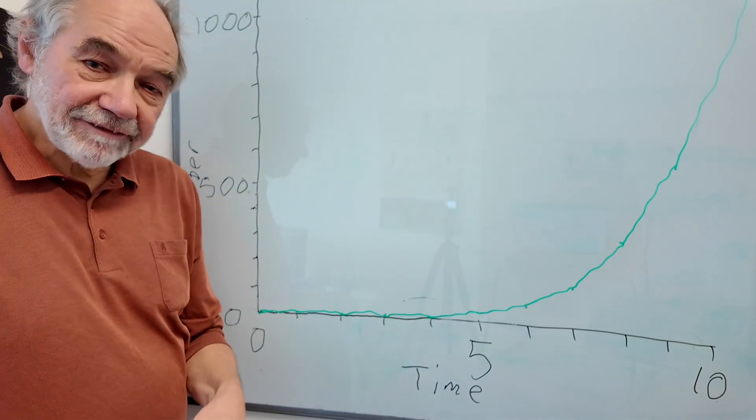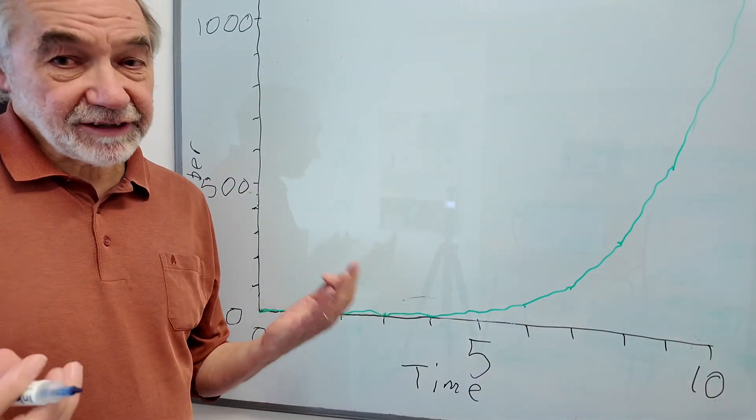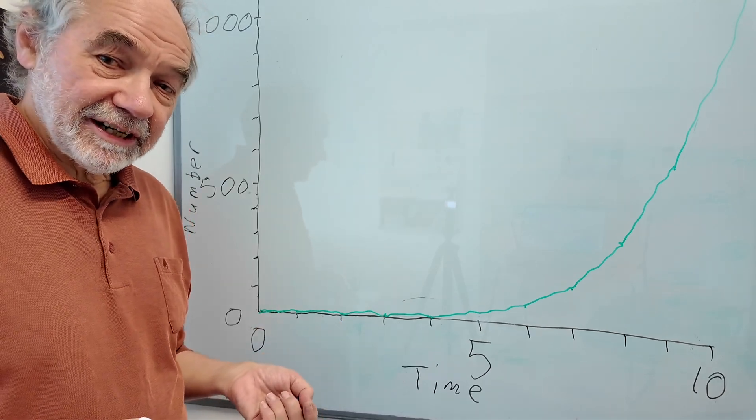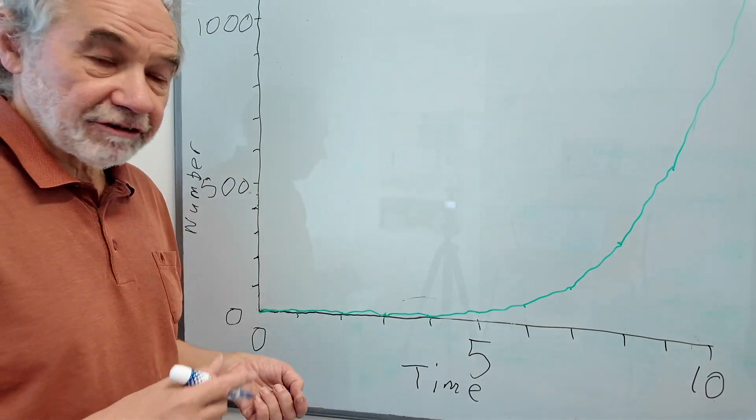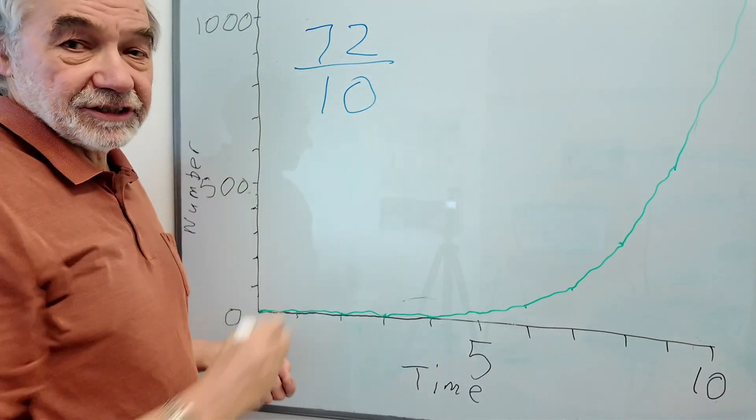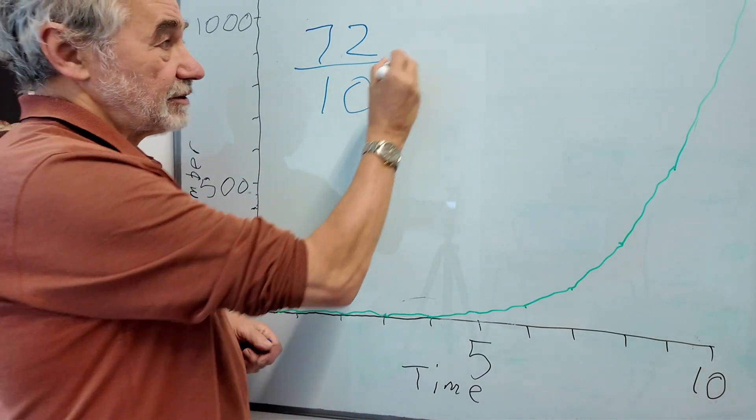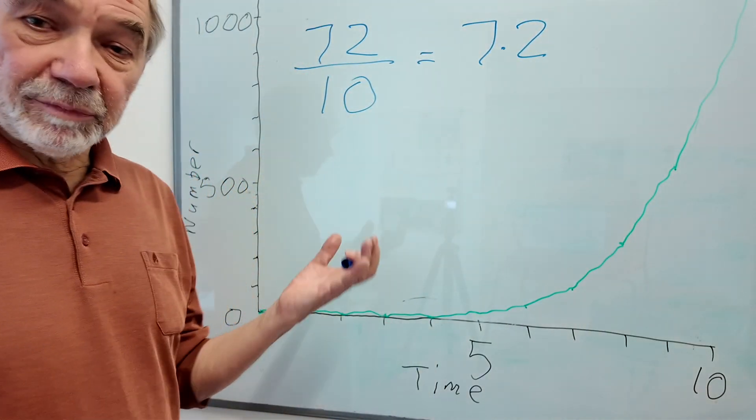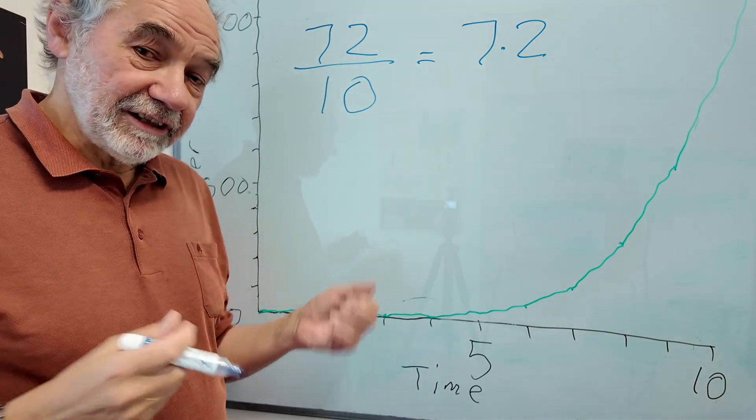A clever trick, the rule of 72, means we can estimate the doubling time for a given population growth rate. So you take 72 and let's suppose it is increasing at 10% a year, just divide that, you get 7.2. So it's going to double in about every seven years.